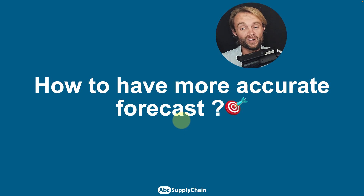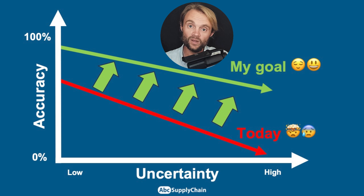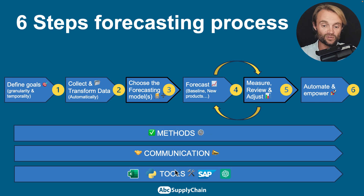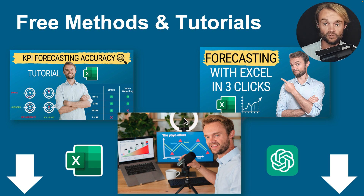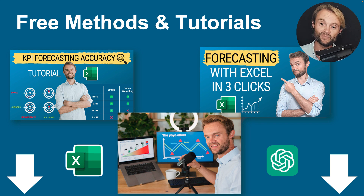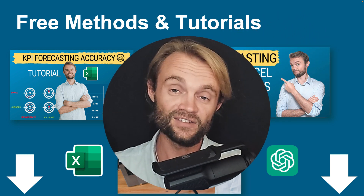My goal is really to help you have a more accurate forecast and keep it simple. We have a lot of uncertainty right now, but you can always improve. We are probably far from 100% accuracy, but with the right tools, the right method, and the right communication — not only using SAP, Excel, or Python, but also having the right mindset across all your departments — you can push to the next step. If you want to go further, I have a lot of tutorials on forecasting and I'm creating a new workshop to teach you how to improve your forecast accuracy in a simple and automatic way. Thank you for watching — leave any comments or questions, give me a like, and I'll see you very soon.